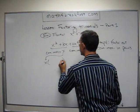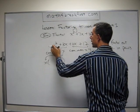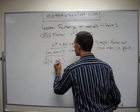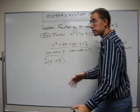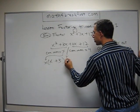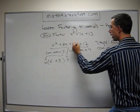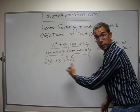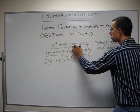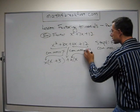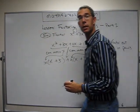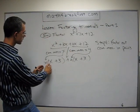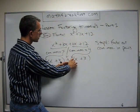So we factor: x times — what gives me x squared? x times x. And x times what gives me 3x? x times positive 3. Plus, and then moving on — I have my 4 here, so I take out the 4. 4 times what gives me 4x? 4 times x. 4 times what gives me 12? Positive 3. So this pair factored into x times (x plus 3), and this pair factored into 4 times (x plus 3).